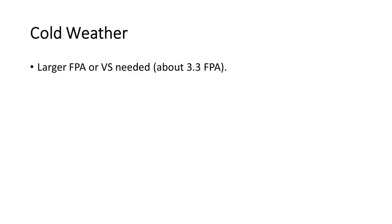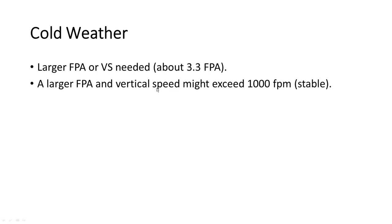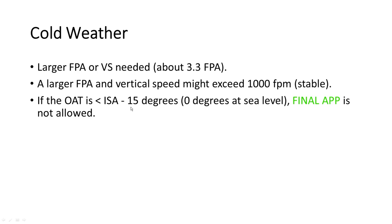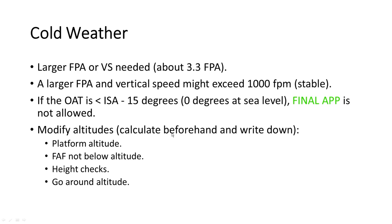For cold weather operations: use a larger FPA or vertical speed — about 3.3 degrees FPA is a good starting point. A larger FPA and vertical speed might exceed 1,000 feet per minute; keep that in mind and brief it. If outside air temperature is colder than ISA−15 (0°C at sea level), final app is not allowed. You want to modify the following altitudes — calculate before and write them down to reduce workload: platform altitude, final approach fix not-below altitude, all height checks, the go-around altitude, and any other altitudes you are flying level at.